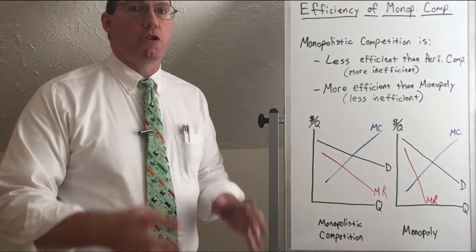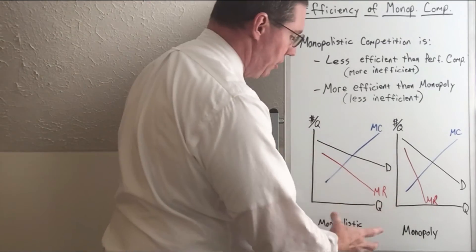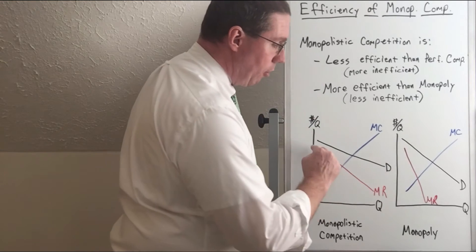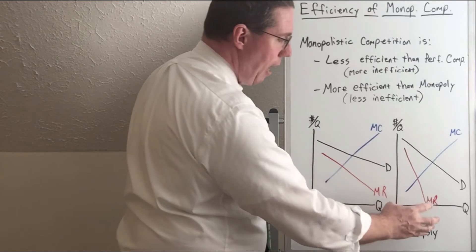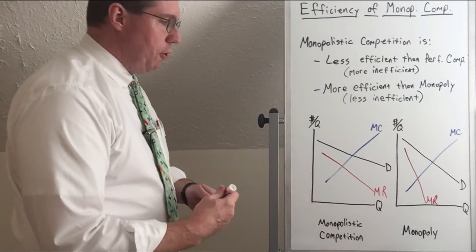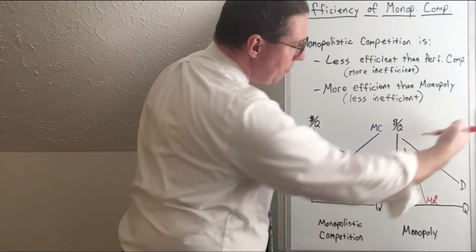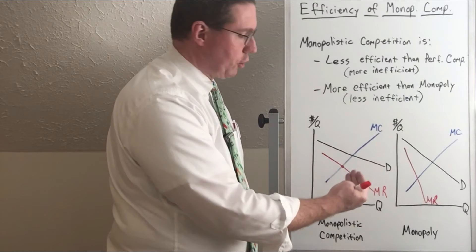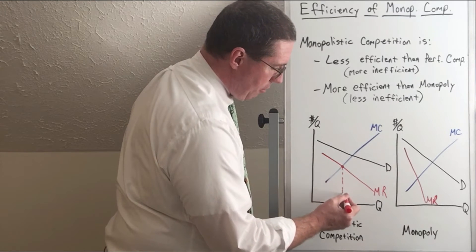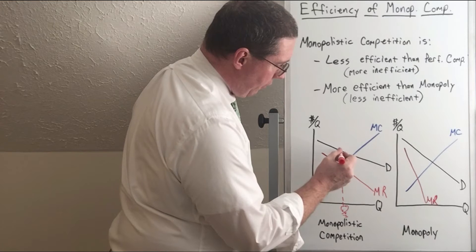Monopoly has the most inefficiency because they have the most market power — the most ability to set their own price. If we do this comparison graphically between monopolistic competition and monopoly, you can see that monopolistic competition has a downward sloping demand curve and a steeper marginal revenue curve than its demand curve. Monopoly has a much steeper demand curve and an even steeper marginal revenue curve. On monopolistic competition, where marginal revenue is equal to marginal cost, both have the same marginal cost curve in this example. Where marginal revenue equals marginal cost determines our profit maximizing quantity, and then going up to the demand curve identifies the price.